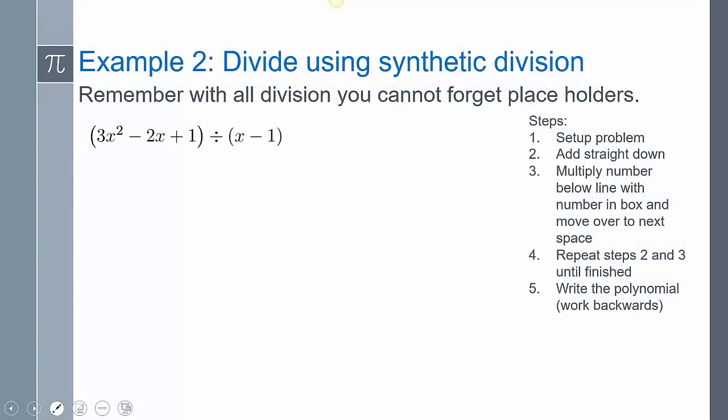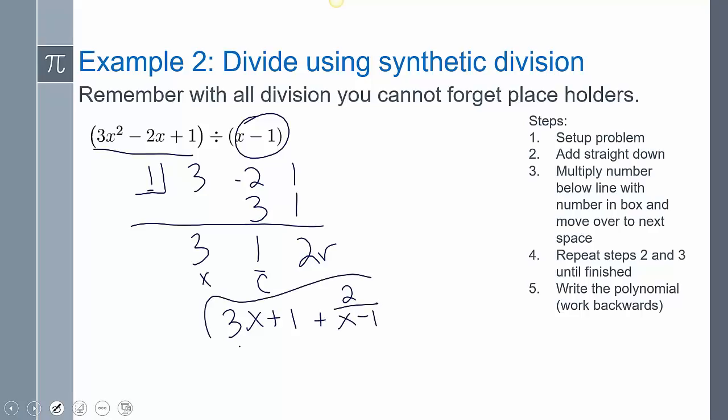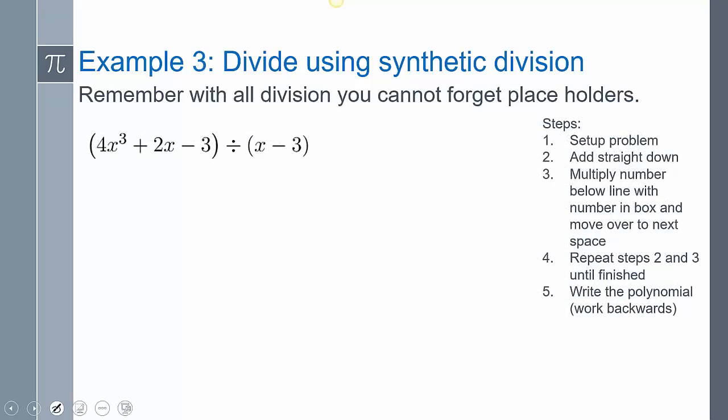Let's look at another example. So we're going to set up the problem. So if I set that equal to zero, you get one. You put one in the box. Now the coefficients: three, negative two, and one. So you follow the pattern: add straight down, multiply, add straight down, multiply with that value within the box, add. So now that we've done it all, counting backwards: remainder, constant, x. So I'm going to get three x plus one plus my remainder, so two over x minus one. Divided that polynomial, it was destroyed.